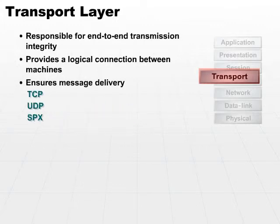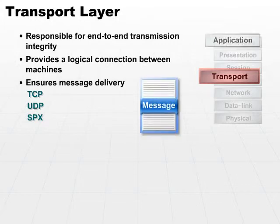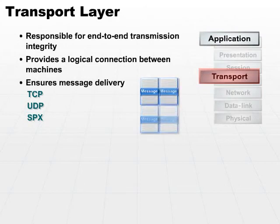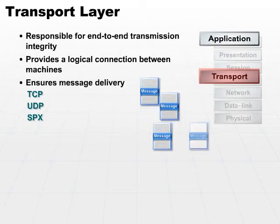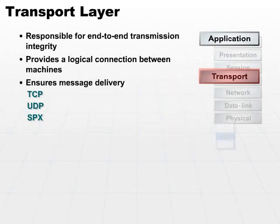These are different protocols. What happens in these protocols is that we will send messages — we'll take the message from the application layer and break it down into smaller pieces. Those smaller pieces are then sent across the wire to the other transport layer logically.